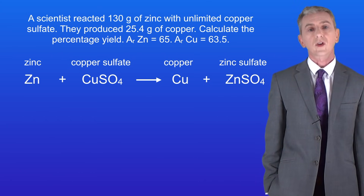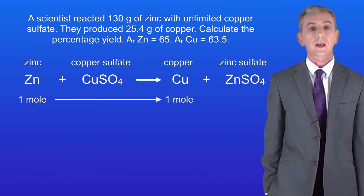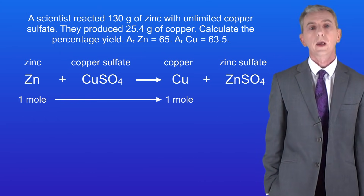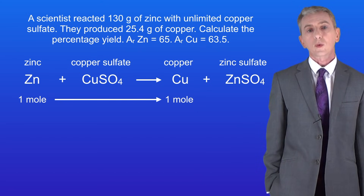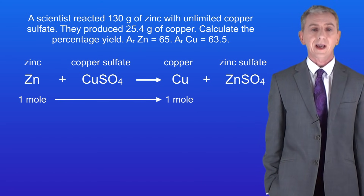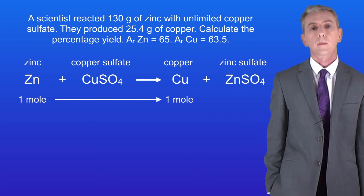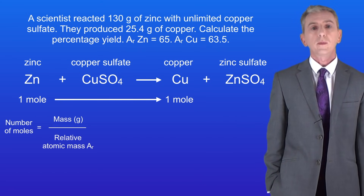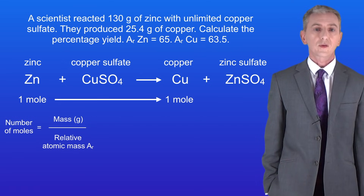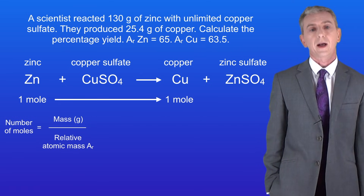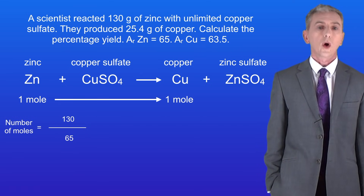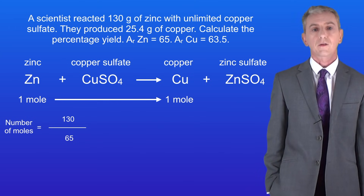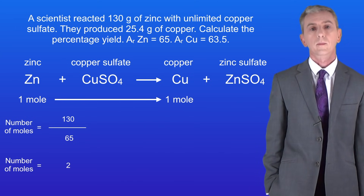The question tells us that one mole of zinc could produce one mole of copper. So first we've got to calculate the number of moles of zinc that we actually have. The number of moles of zinc is the mass we're given divided by the relative atomic mass. 130 divided by 65 tells us that we've got two moles of zinc atoms.